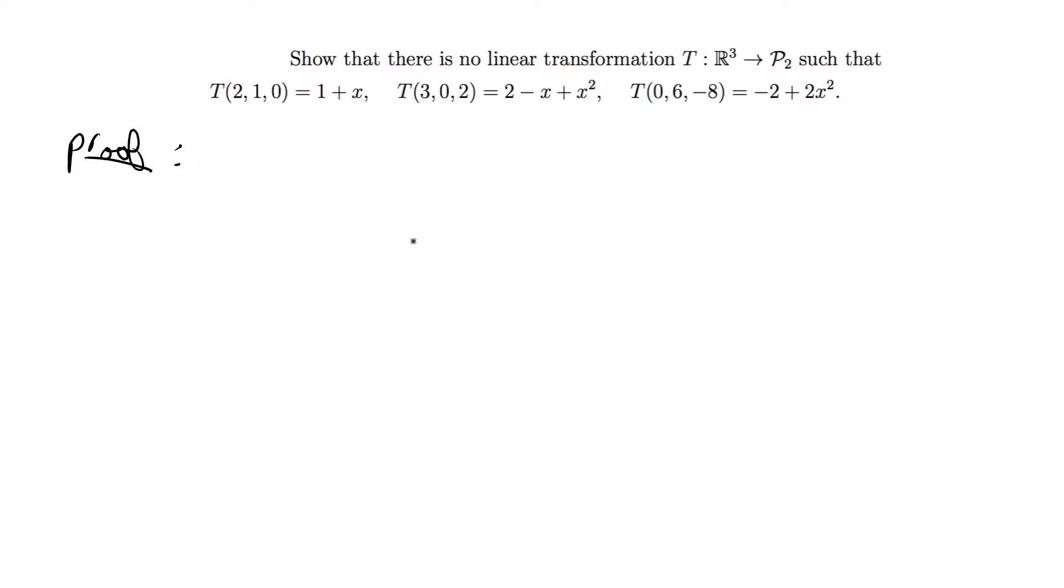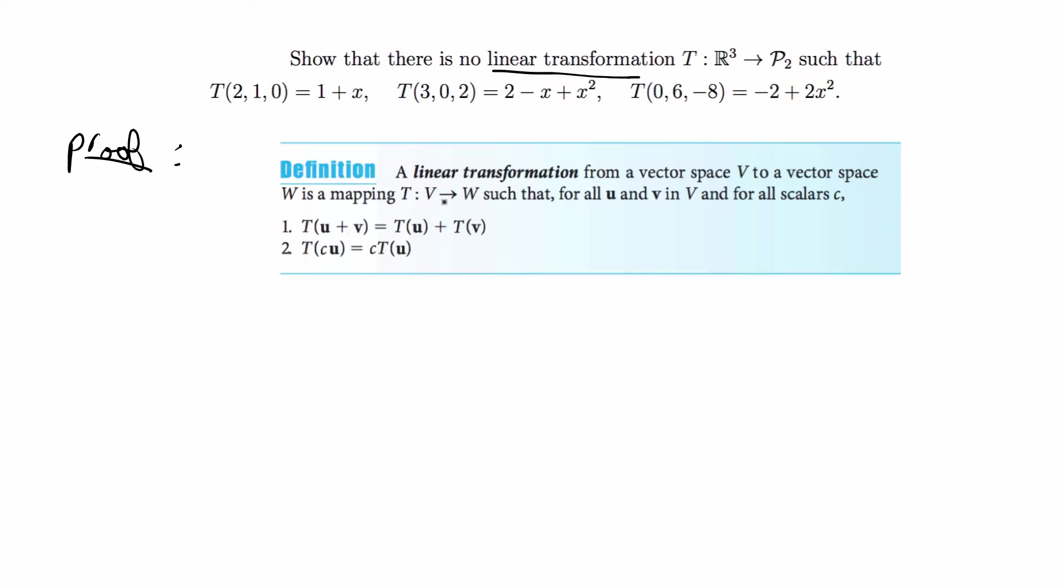This is testing above all else if you know what the definition of a linear transformation is in linear algebra. So I have this little graphic from my textbook and it has the definition of what a linear transformation is. It says a linear transformation from a vector space V to a vector space W is a mapping such that for all u and v in V and for all scalars c, and then it has these two conditions. It's basically an addition condition and a scalar multiplication condition.